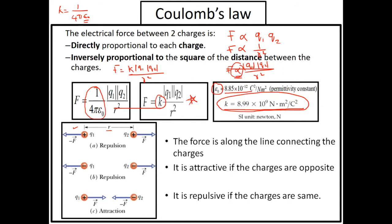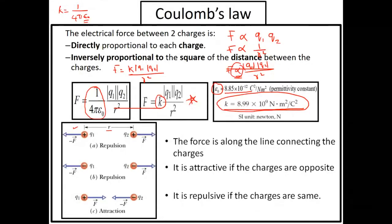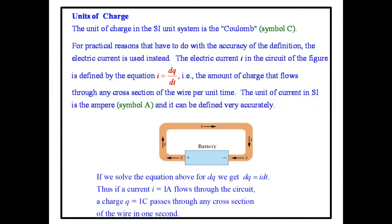For q1 and q2 you must use absolute values — magnitudes. Suppose you have two negative charges, just take the magnitude. All constant values will be given in your exam paper, so don't worry about memorizing the constants.